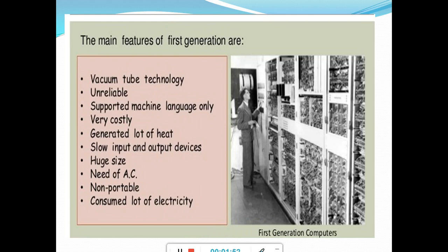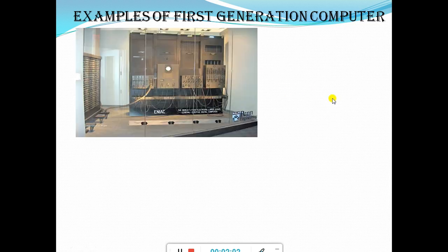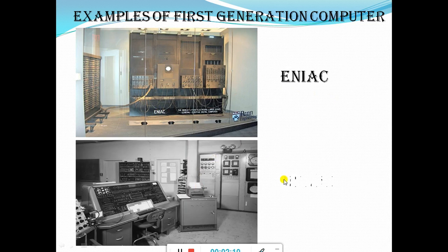It had very limited commercial use as they were difficult to program. Examples of the first generation computer: ENIAC and UNIVAC. Comparing the first generation with today's computers, they were very big in size, very heavy, and also expensive. They consumed a lot of electricity and were not portable.